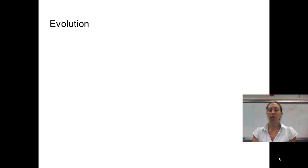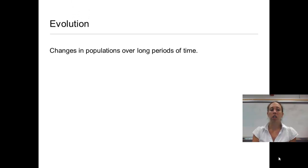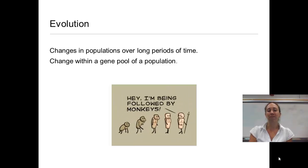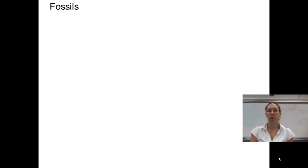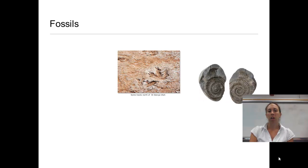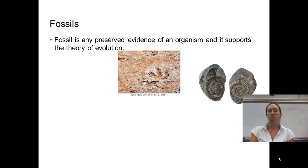Evolution is changes in a population over long periods of time, or change within a gene pool of a population. Fossils are a way to prove that evolution has occurred. A fossil is any preserved evidence of an organism, and it supports the theory of evolution.